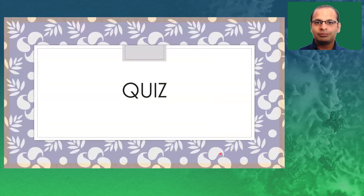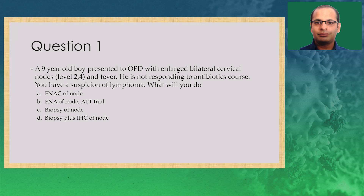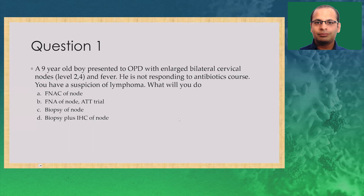Question 1: An elderly male presented to OPD with enlarged bilateral cervical nodes and fever, not responding to antibiotics. You are suspecting lymphoma. What will you do? Options: FNAC of the node and ATT trial; biopsy of the node; or biopsy plus IHC of the node. Most of you have written biopsy with IHC, which is the correct answer. FNAC alone is insufficient. Biopsy plus IHC of the node is what is recommended for these patients.